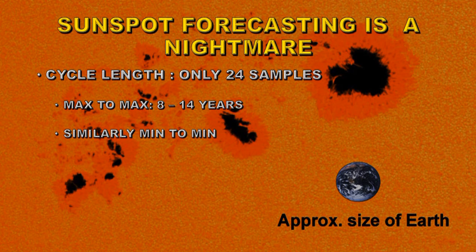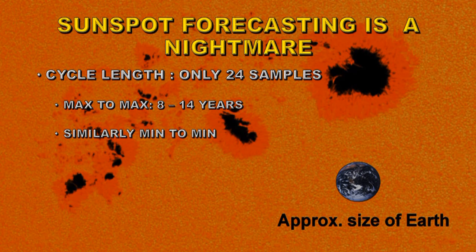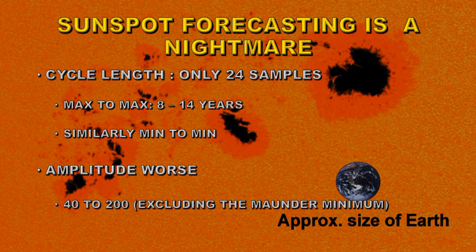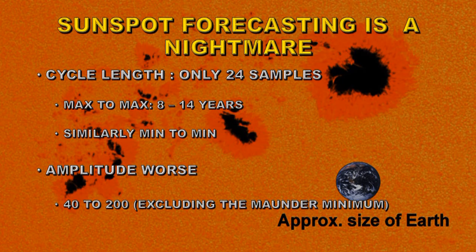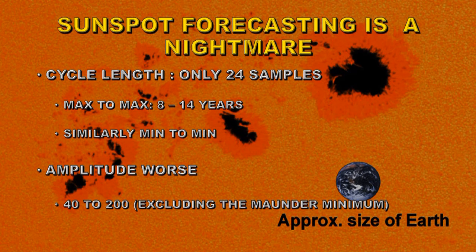You may hear on YouTube a lot of people trying to forecast the solar cycle with great confidence — don't believe them at all. It's very difficult to do. We've only got 24 samples of the solar cycle, so from maximum to maximum we have a range of between 8 and 14 years — nearly a factor of two. The amplitude ranges from 40 to 200, and going back to the Maunder Minimum you can take the lower limit down to zero. There seems to be no pattern to either the amplitude or the timing, which is why none of the 104 published predictions for solar cycle 24 got both the amplitude and timing correct.